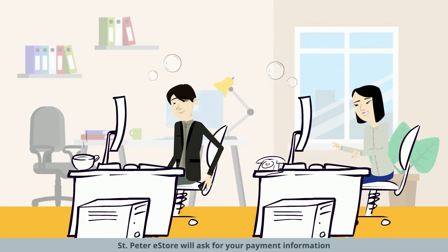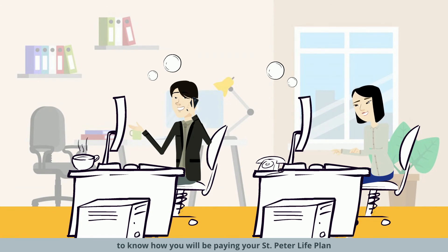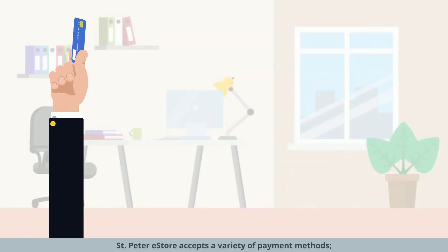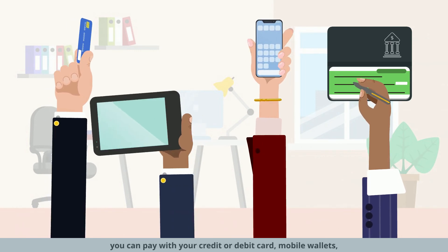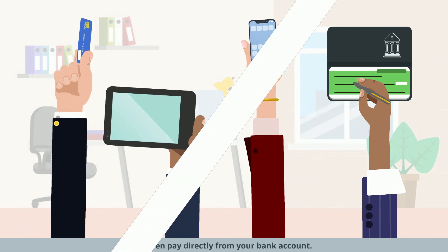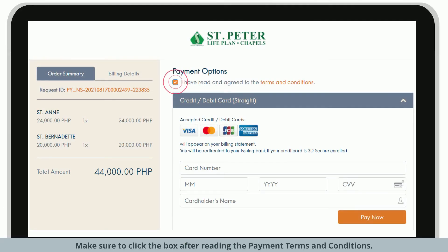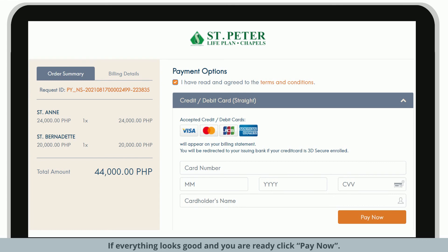The St. Peter eStore will ask for your payment information to know how you'll be paying your St. Peter Life Plan. St. Peter eStore accepts a variety of payment methods. You can pay with your credit or debit card, mobile wallets, or even pay directly from your bank account. Make sure to click the box after reading the payment terms and conditions. Once you are done entering all the required information, review your order summary and payment details to ensure that details are correct. If everything looks good and you are ready, click Pay Now.